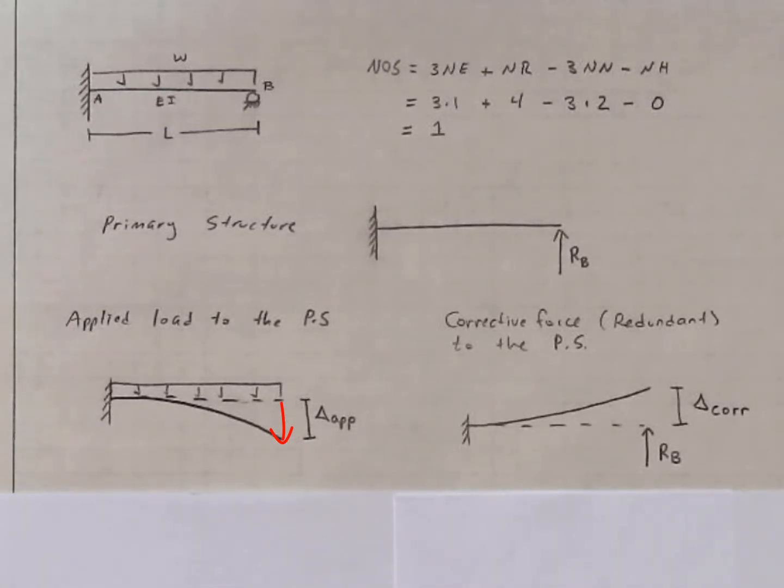In reality, there's a roller there. So I need to do something to the primary structure to cause this point going back up. I need to correct the error that was introduced by removing the roller. And it's this force right here that will correct that error. R sub B pushes up by a certain amount that I'm calling delta sub CORR for a corrective deflection.